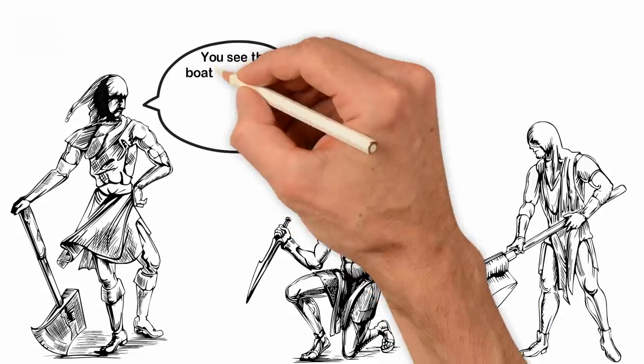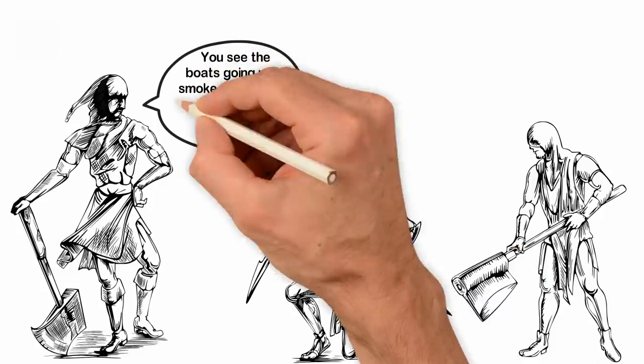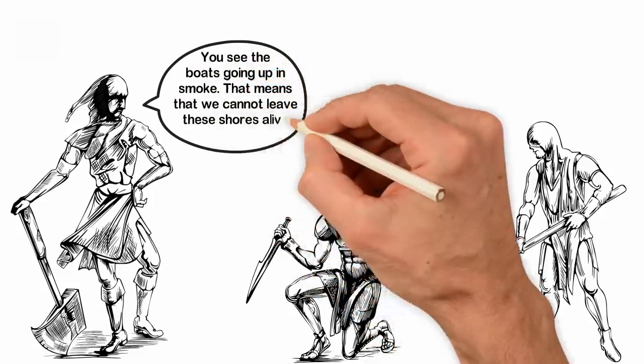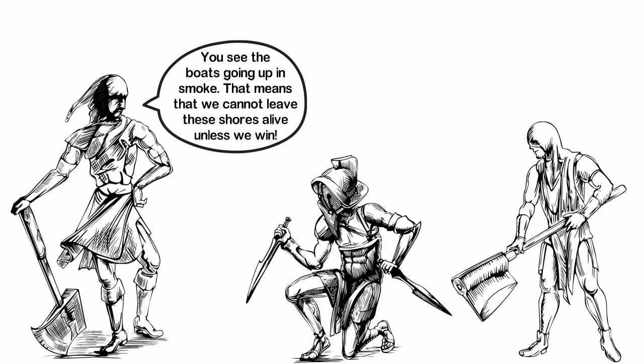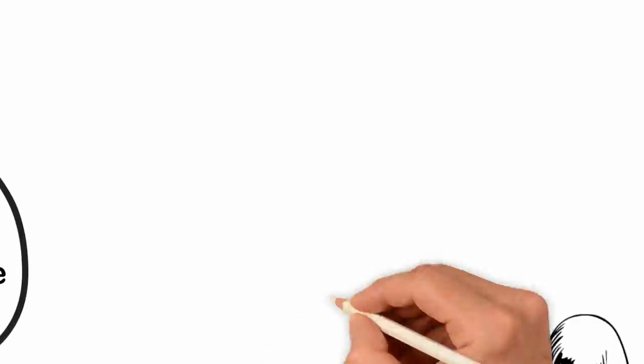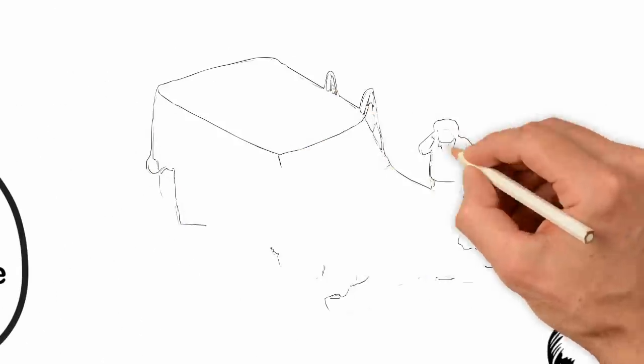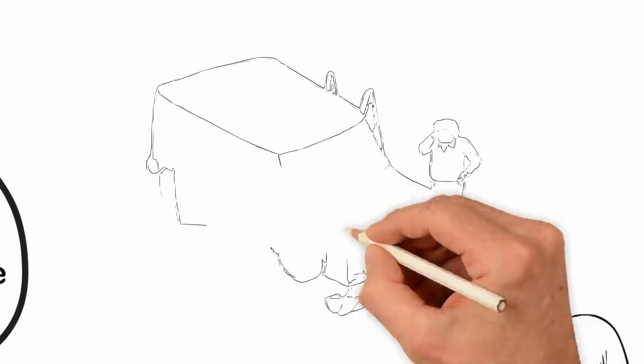Addressing his men before the first battle, he said, you see the boats going up in smoke, that means we cannot leave these shores alive unless we win. That's how the general got the victory. Aside from Cortes and the warrior Napoleon Hill wrote about, the history of warfare is filled with many great warriors who have won great battles by burning their ship.